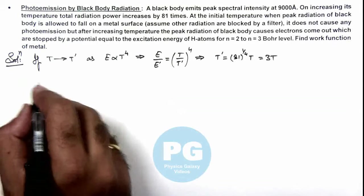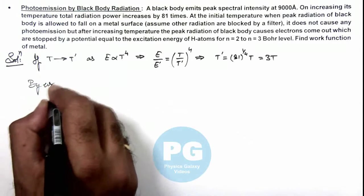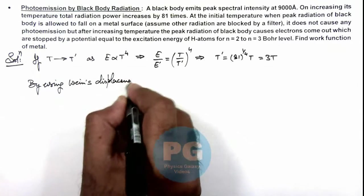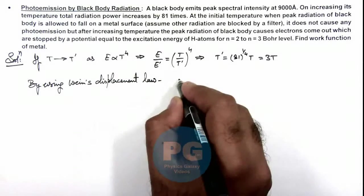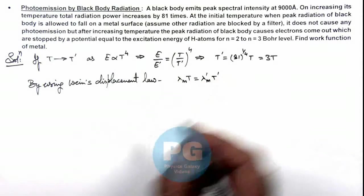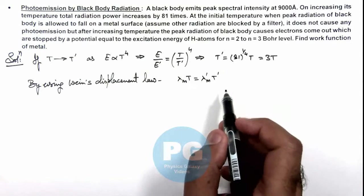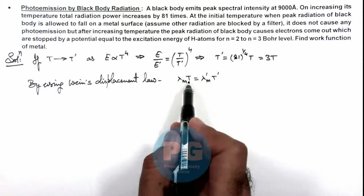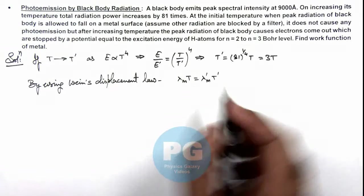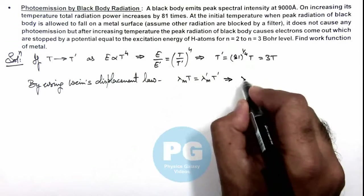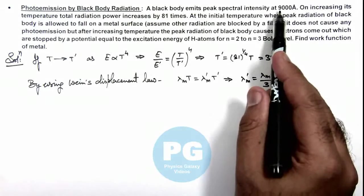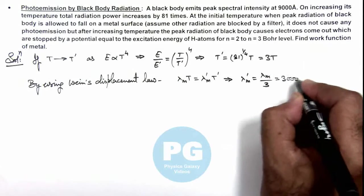And here we can also use Wien's displacement law. Here we can write lambda m multiplied by T should be lambda m prime multiplied by T prime, which is a constant. In the product of spectral intensity maximum at wavelength lambda m, the product of lambda m and T remains constant. So on substituting the value of T prime, lambda m prime is given as lambda m by 3. We are given that initially lambda m was 9000 angstrom, so this is now 3000 angstrom.